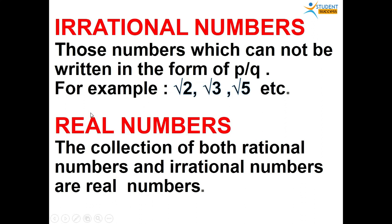The last category is real numbers — last but not least. Real numbers: the collection of both rational numbers and irrational numbers are called real numbers. So, the types of numbers are: natural numbers, whole numbers, integers, rational numbers, irrational numbers, and real numbers.